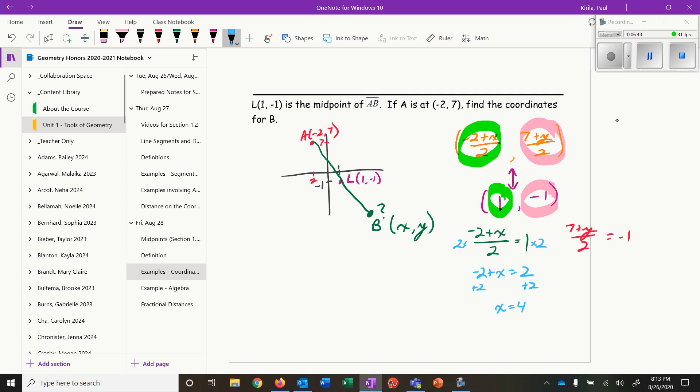For the y's, again to get rid of the divided by 2, I'm going to multiply by 2, and what I do on one side I have to do on the other. So 7 + y is equal to -2. To get rid of this positive 7, I need to subtract 7, and what I do on one side I have to do on the other. I'm left with y equals -9, and so that's my y coordinate. So these here.